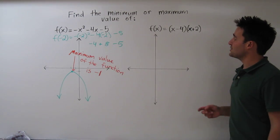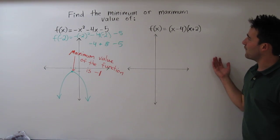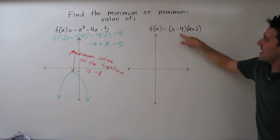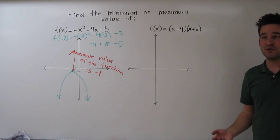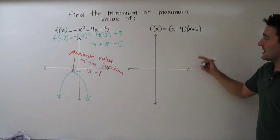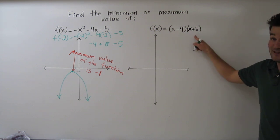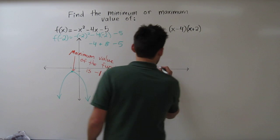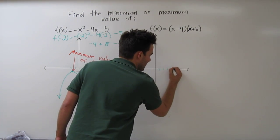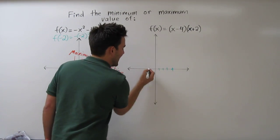Over here, we have a function that's in intercept form. So actually, this x minus 4 and this x plus 2 tells us the x-intercepts are at, we can solve each of these for, set each of them equal to 0. And we see the x-intercepts are at 4, right there, and negative 2.